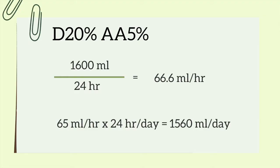For tube feeds and TPNs, we like to round to the nearest five for our rates because it's easy on the nurses. If the patient's on a mechanical ventilator, I often recommend rounding down, so I'd round to 65 milliliters per hour. To recalculate the total milliliters in the solution, I multiply by 24. That gives me 1,560 milliliters per day.